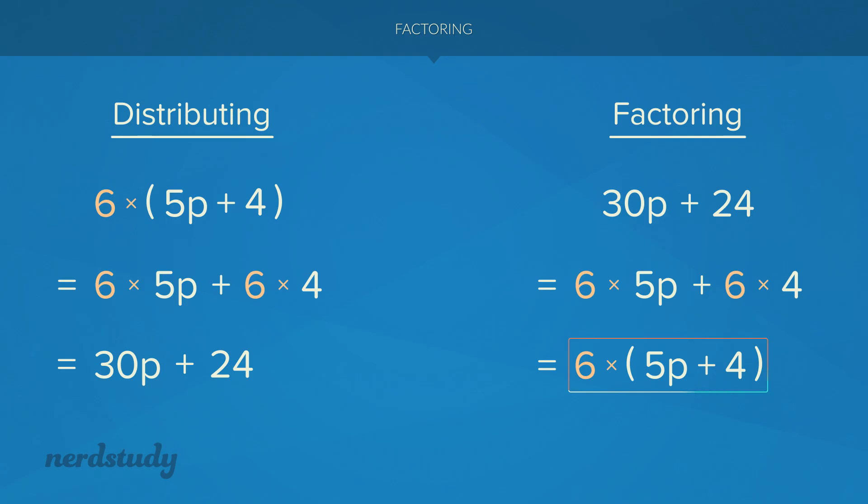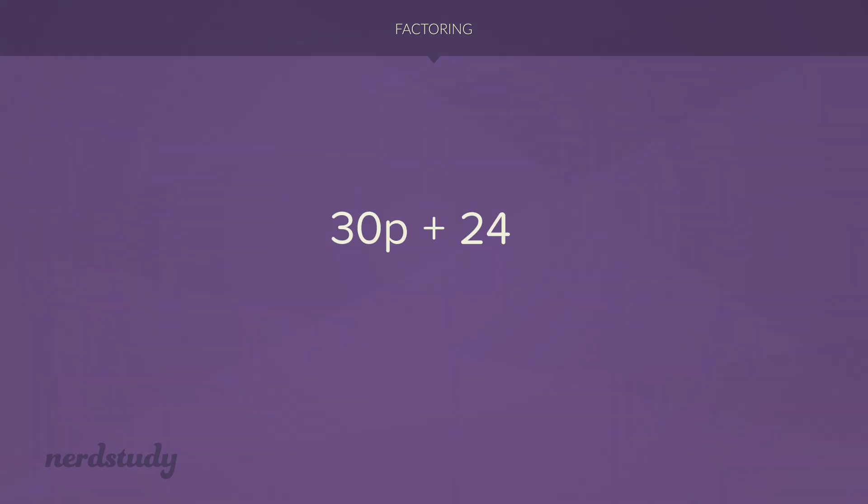And if you want to double check if you factored things correctly, then all you have to do is try expanding the algebraic expression that you ended with. And you should be getting the very first expression that you started from. After all, expanding is the process of using the distributive property. So it's evident to us that we did factor this correctly. Great. Now that was our first example for factoring. But let's use the exact same expression and try factoring out a different number.